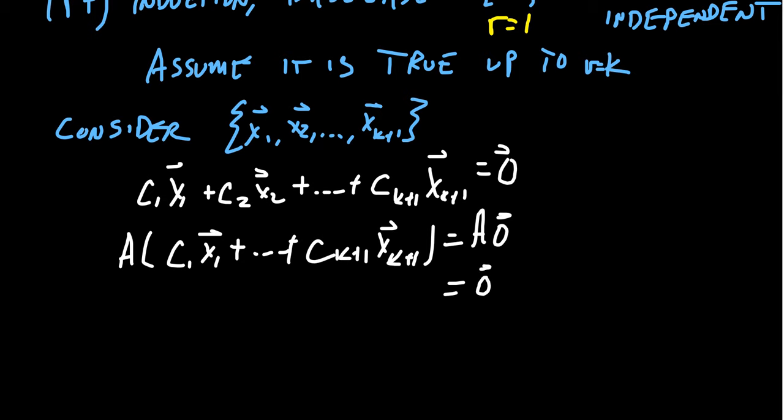But also on the left, we can distribute this A onto each of the pieces in this term. And so you're going to get A times X, where all of those Xs are different eigenvectors. And so when you times the eigenvector by the matrix, it's the same thing by timesing that scalar. C1 lambda 1 X1. And then you're going to get C2 lambda 2 X2.